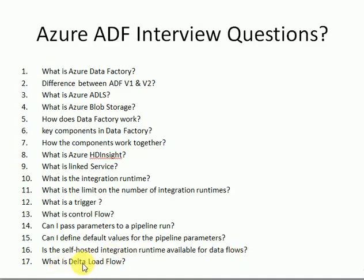What is delta flow? Delta flow is a key feature for incremental load — loading only the changed data. This is a fundamental concept in any data warehousing project. You should know this, and this feature is available in ADF. You need to explain how it works and when to use it.